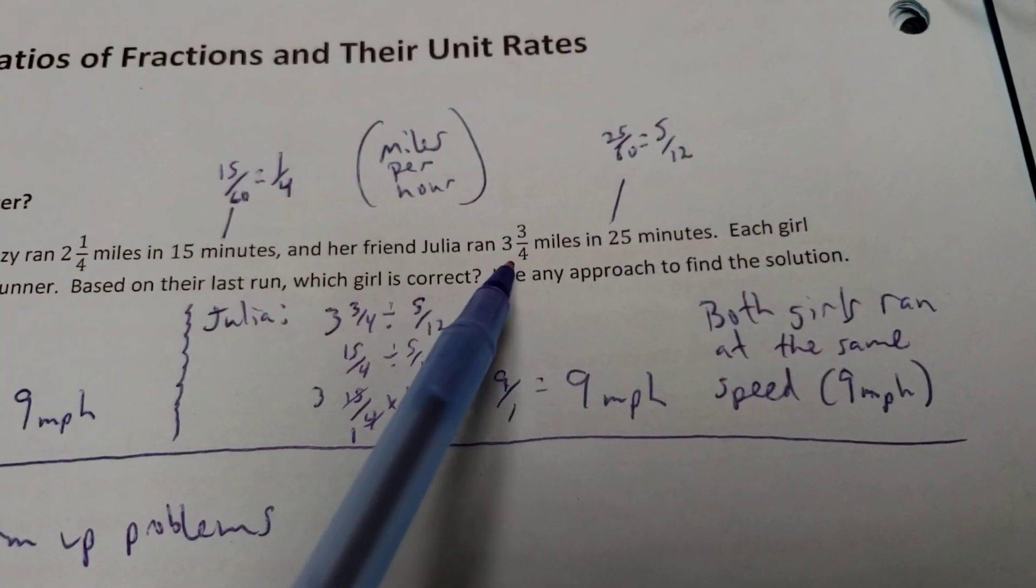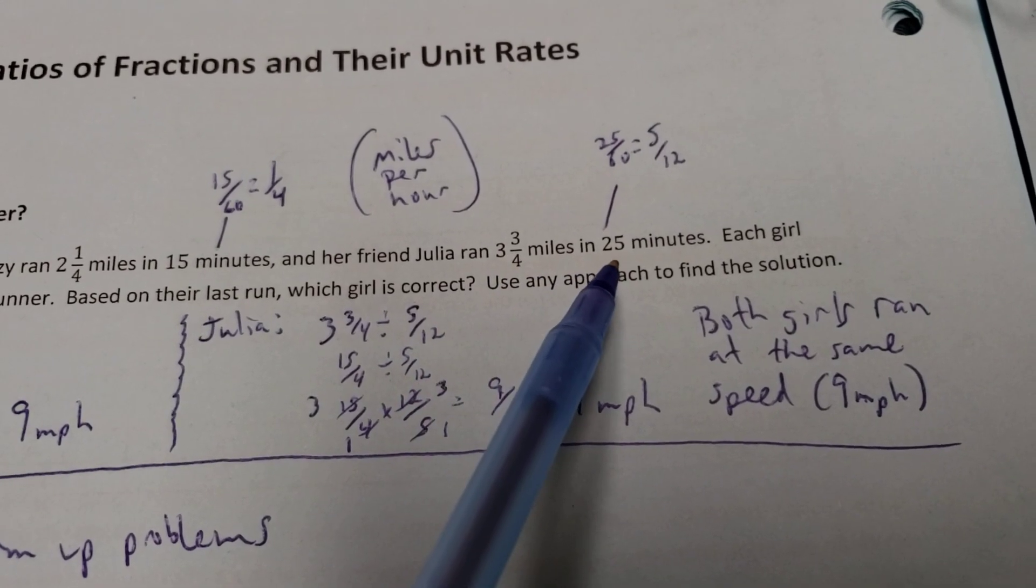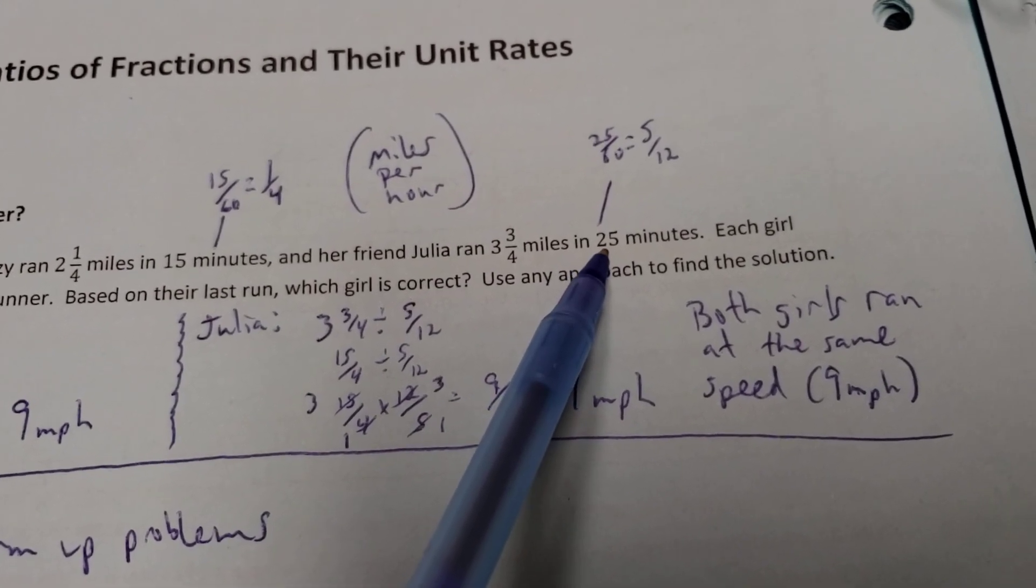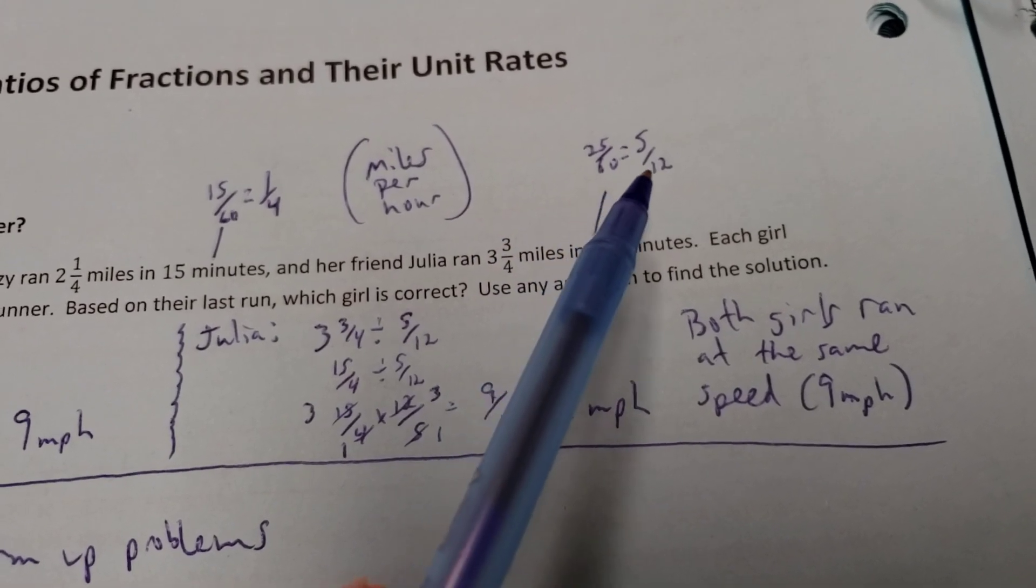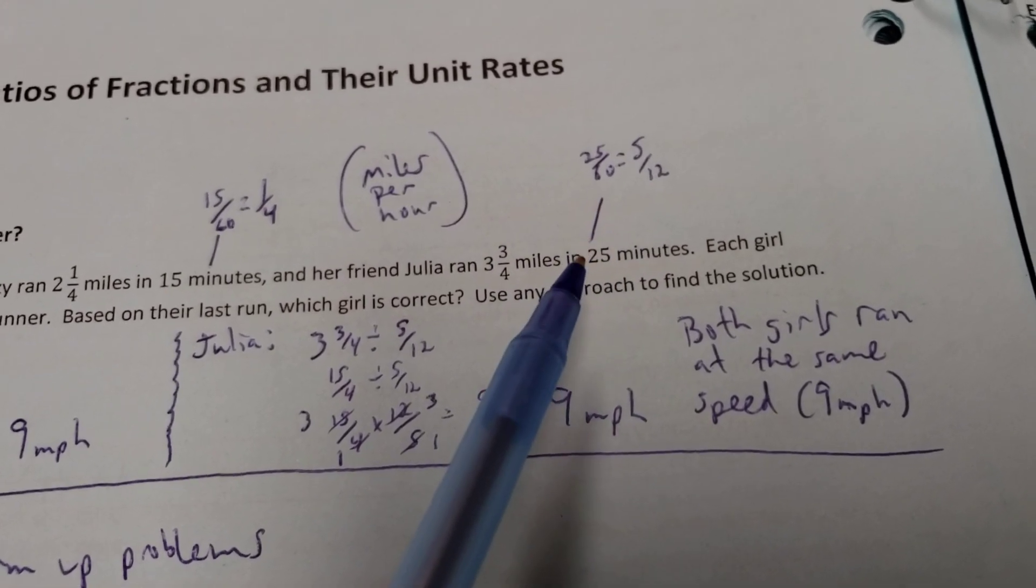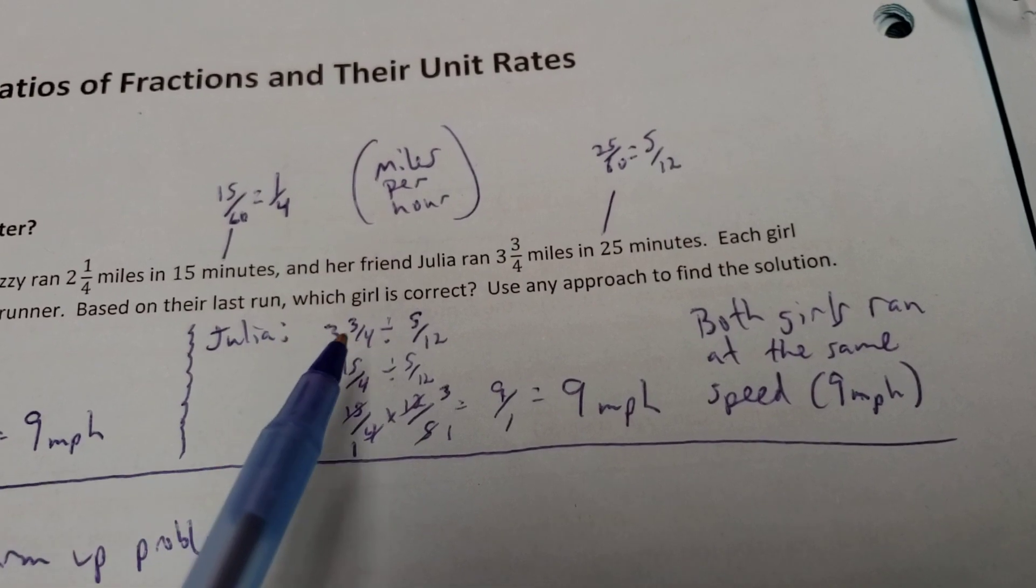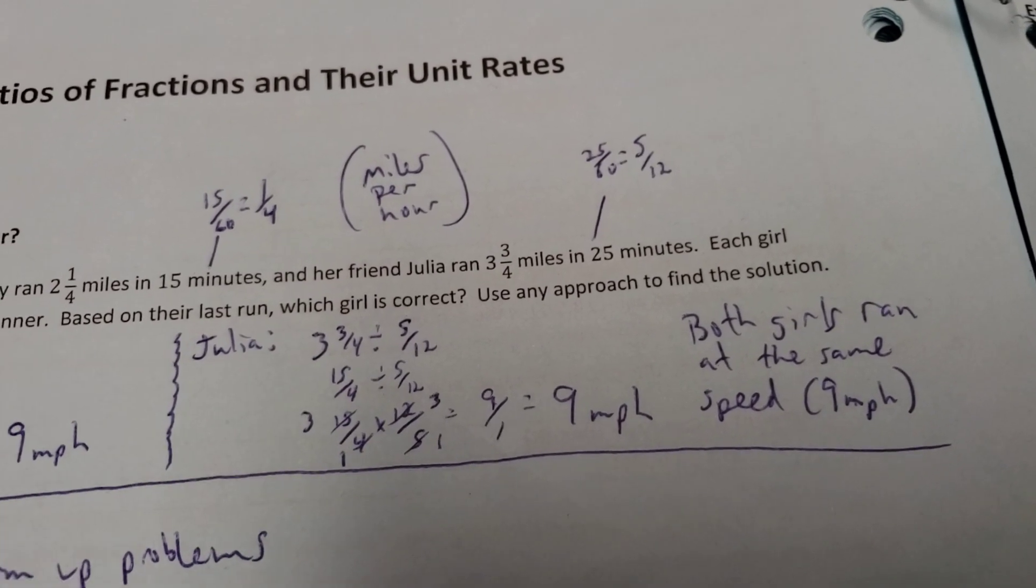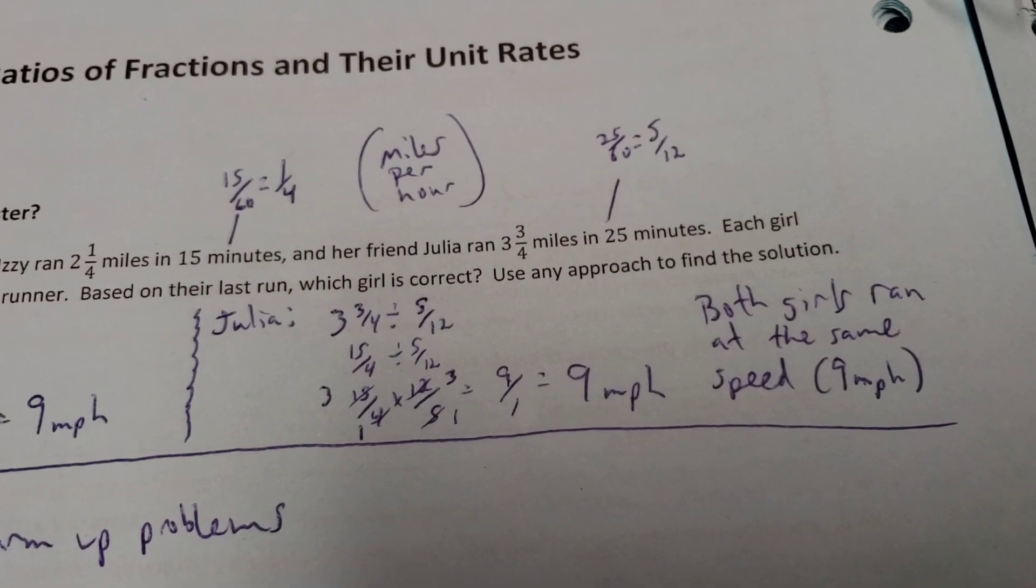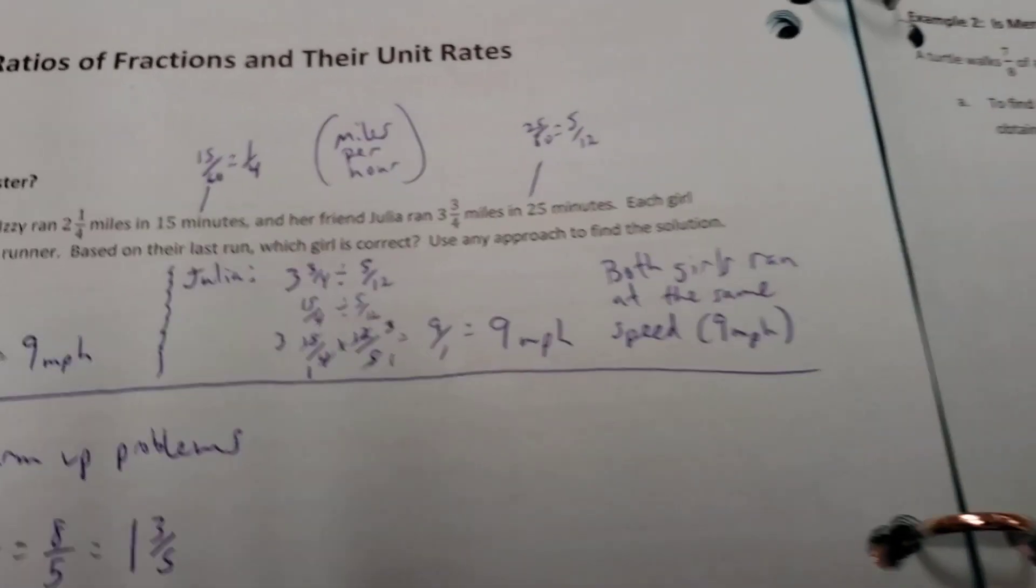Our other girl, she ran a little bit longer, took her a little bit longer time as well. 25 minutes, once again, is out of 60 minutes to make a full hour. So 25 out of 60, lowest terms is 5/12ths. And 3 3/4 divided by 5/12ths. And there we go. You can divide that out. And we get 9 miles per hour, so both girls run at the same speed.